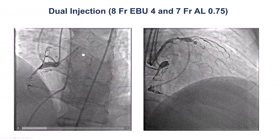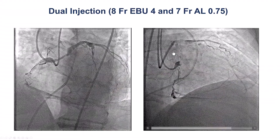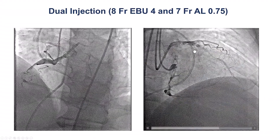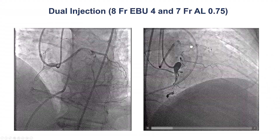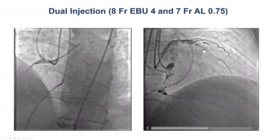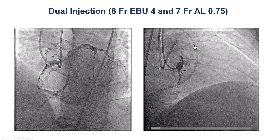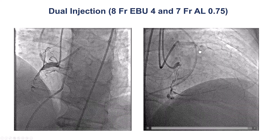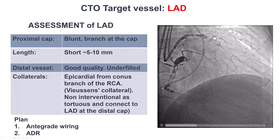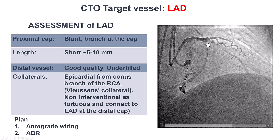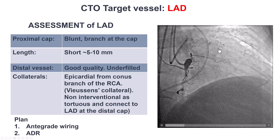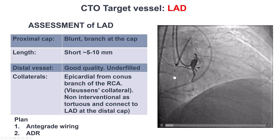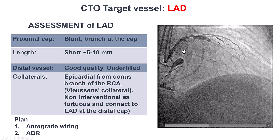This is the dual injection, injecting from the right coronary artery as well as the left main. We have femoral-radial access. On the dual injection, the LAD is a very favorable CTO — a very short occlusion. There seems to be some tapering of the proximal vessel and some distal disease, but the length is very short. We have a relatively blunt entry, but there may be a microchannel there. The distal vessel is of good quality, although there is some disease.